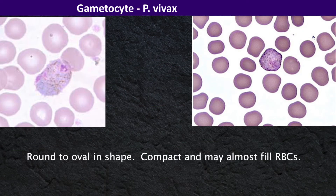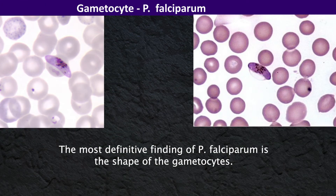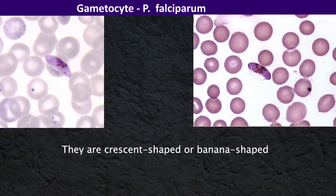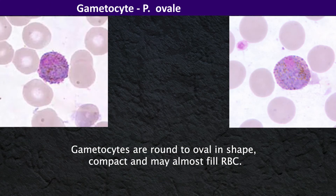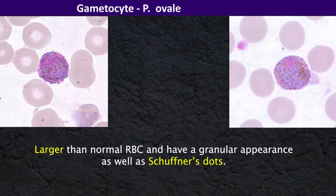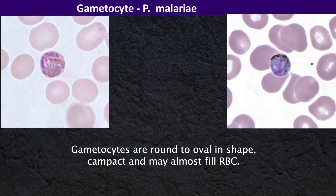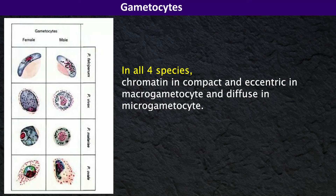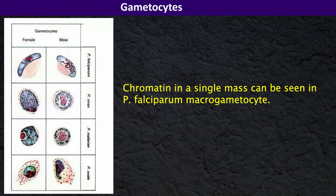Plasmodium vivax gametocytes are round to oval in shape, compact, and may almost fill red blood cells. The most distinctive finding of Plasmodium falciparum is the shape of the gametocyte — unlike other species, they are crescent-shaped or banana-shaped. Plasmodium ovale gametocytes are round to oval in shape, compact, and may almost fill red blood cells. In all four species, the chromatin dot is compact and eccentric in macrogametocytes and diffuse in microgametocytes. Plasmodium ovale gametocytes are larger than normal red blood cells with a granular appearance and Schüffner's dots. Chromatin in a single mass can be seen in Plasmodium falciparum macrogametocytes.